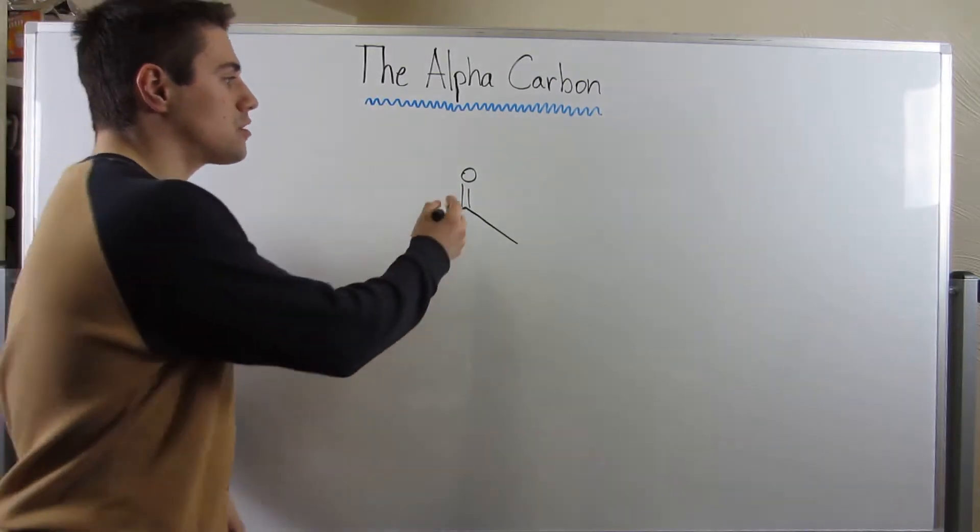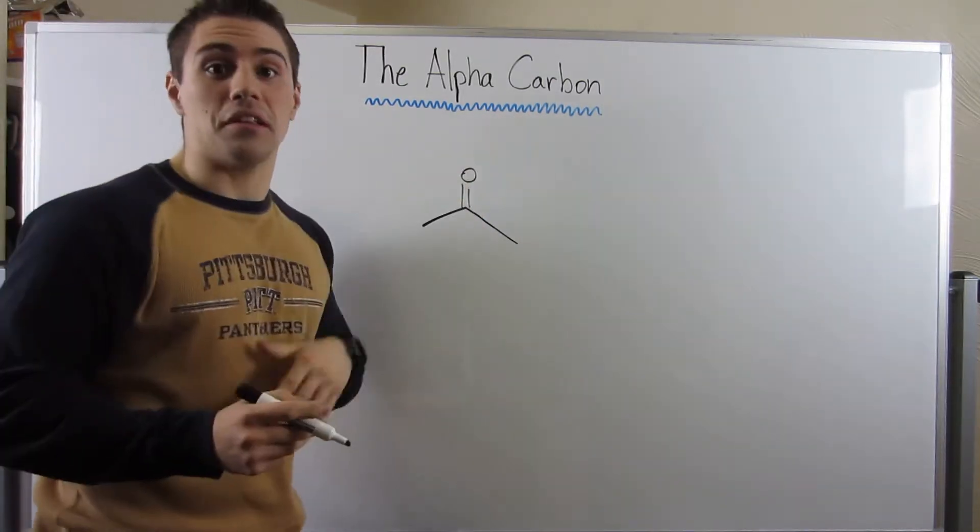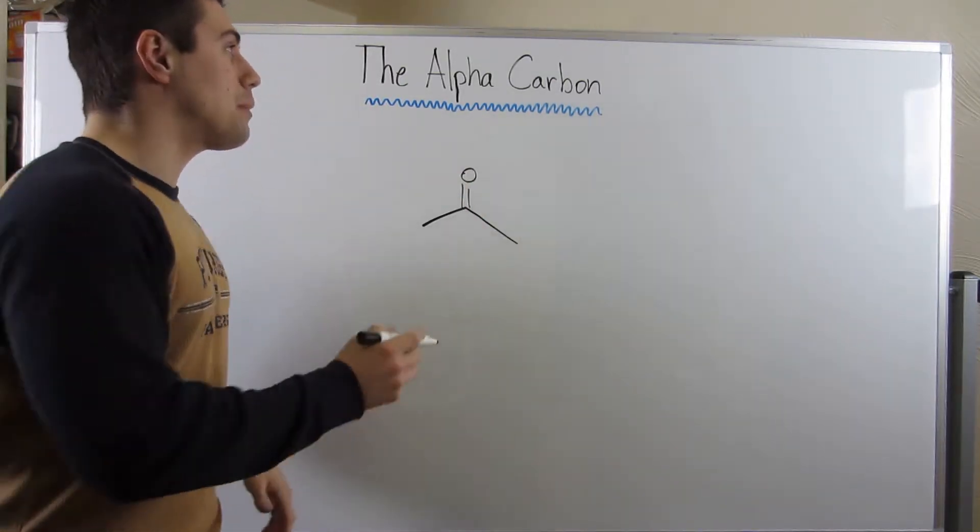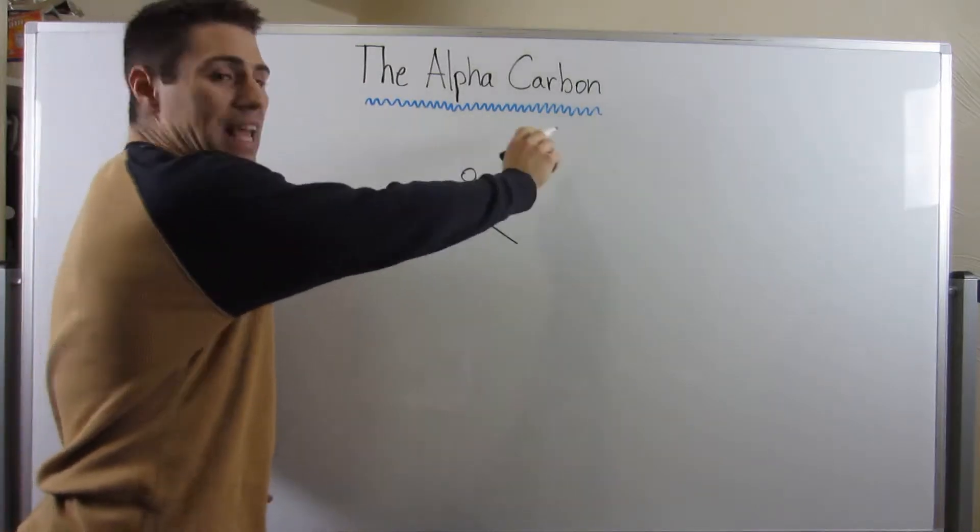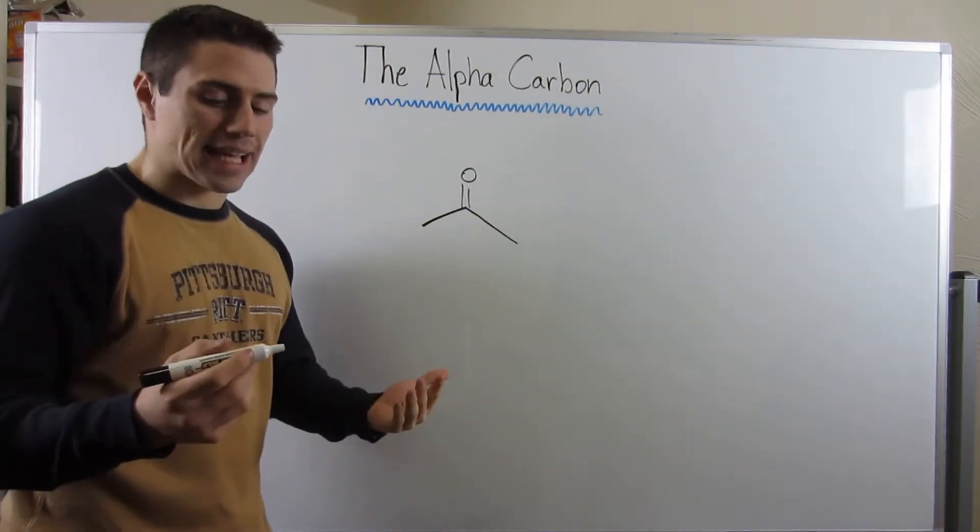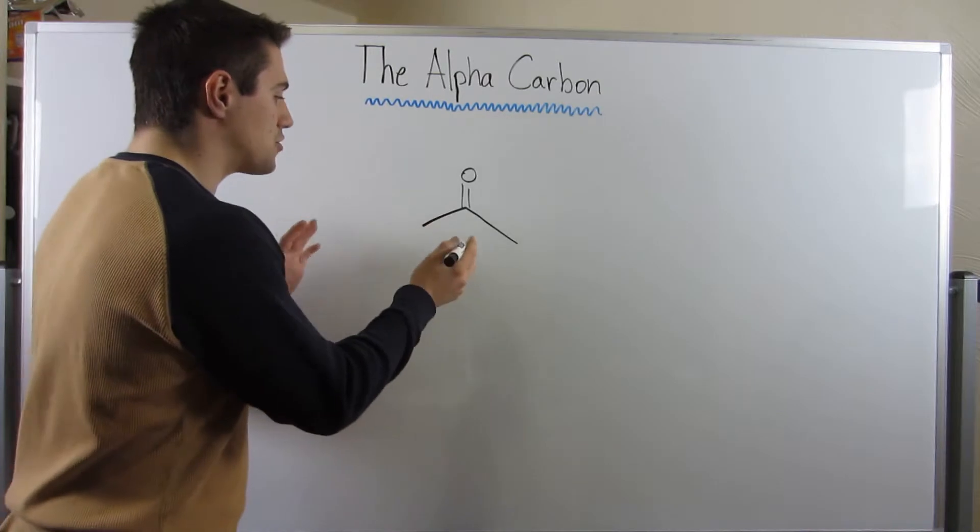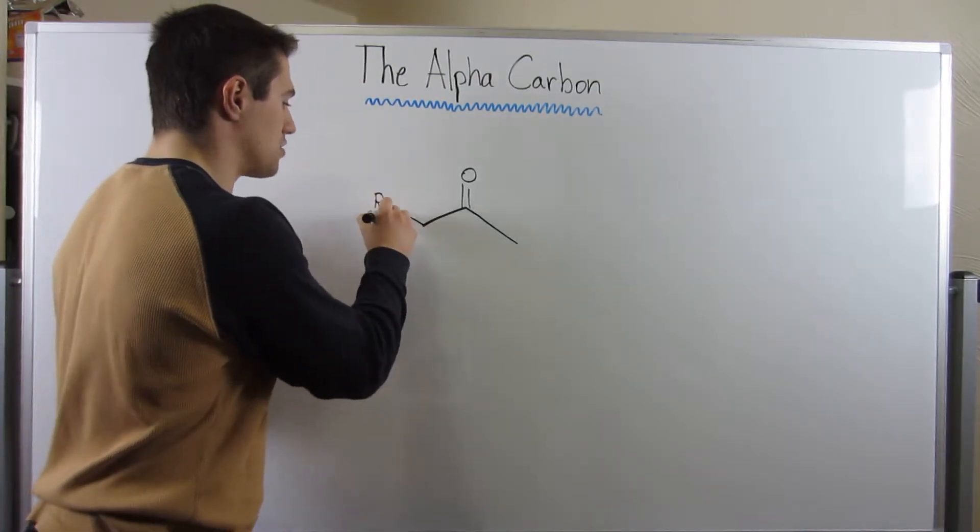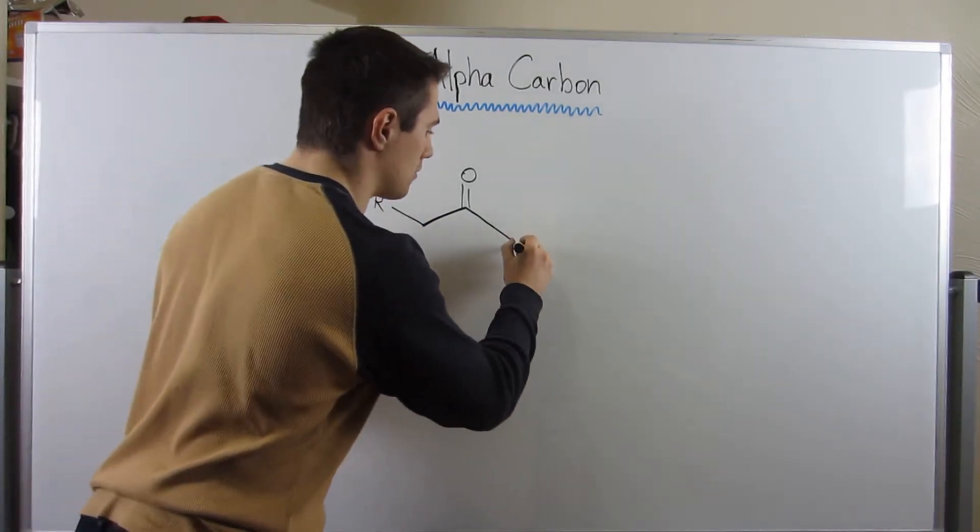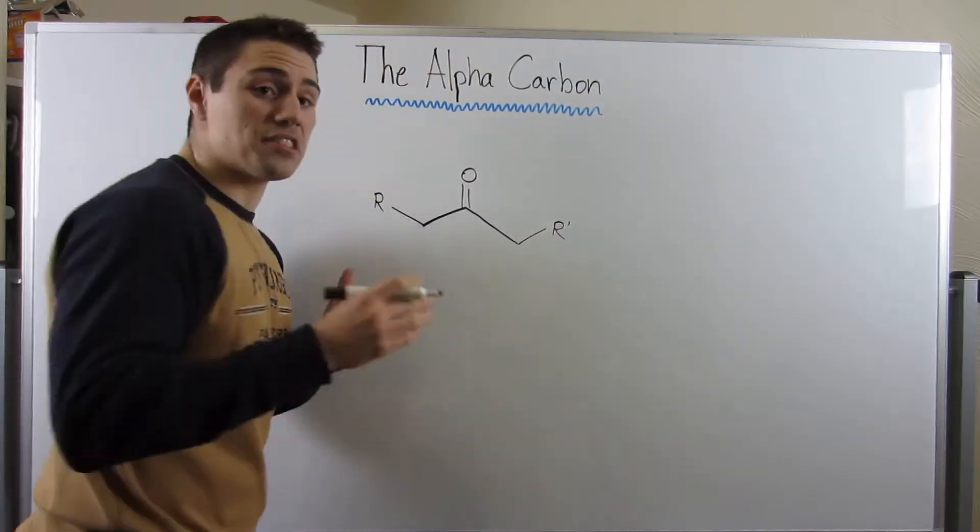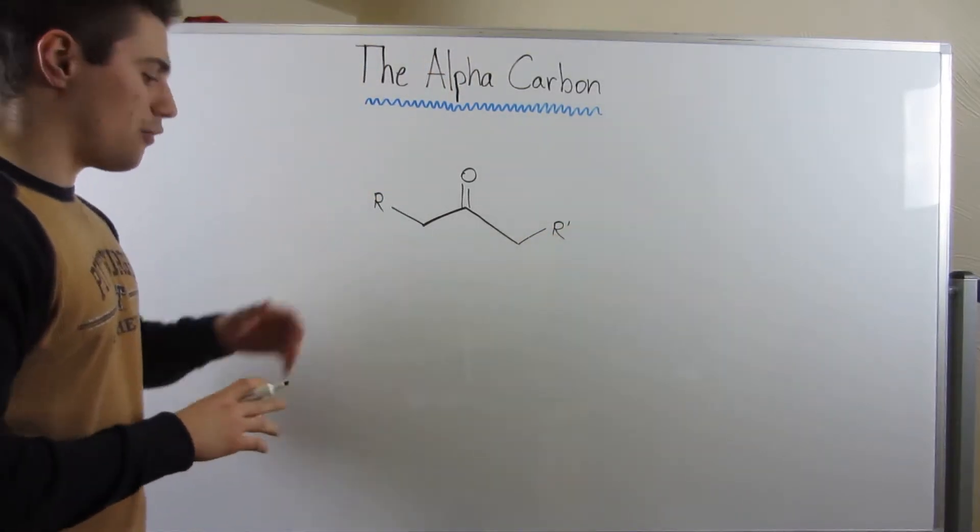Okay, so now we're going to kind of not focus so much on the carbonyl like we did in the last unit of material, but now we're going to focus on what's called the alpha carbon. And what is that exactly? Well, if I have some generic carbonyl, let's just say this is an R group over here, and let's just call this R prime.